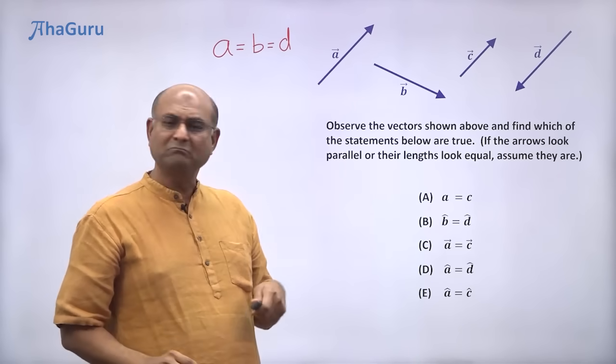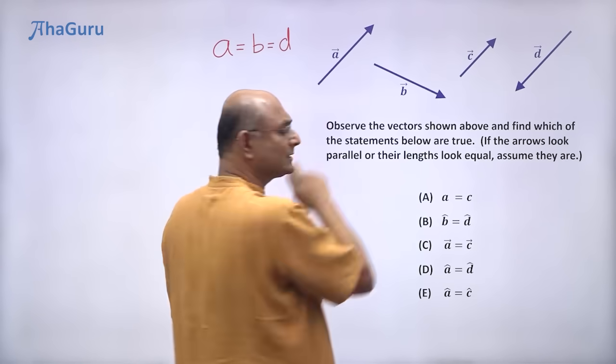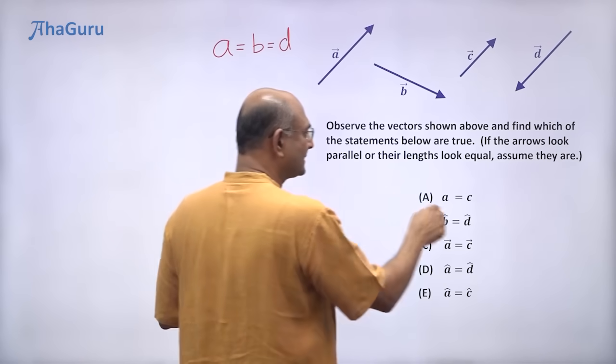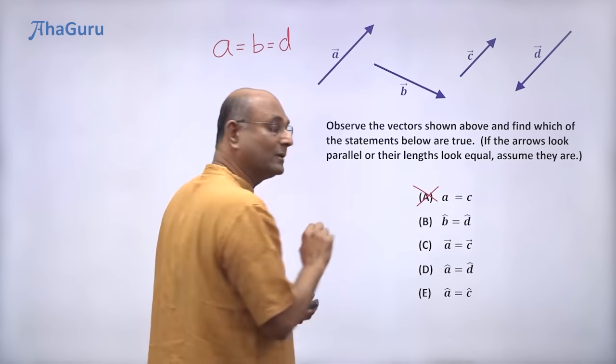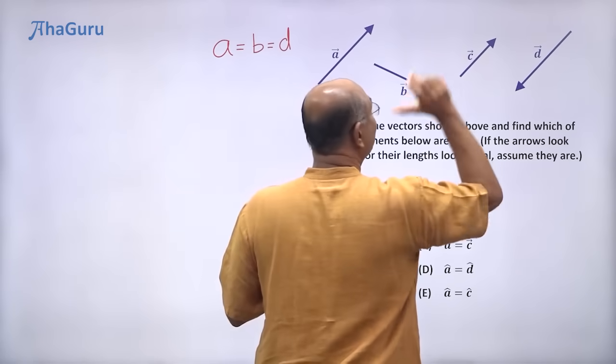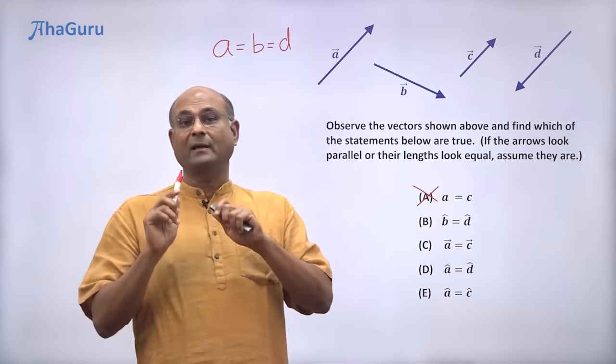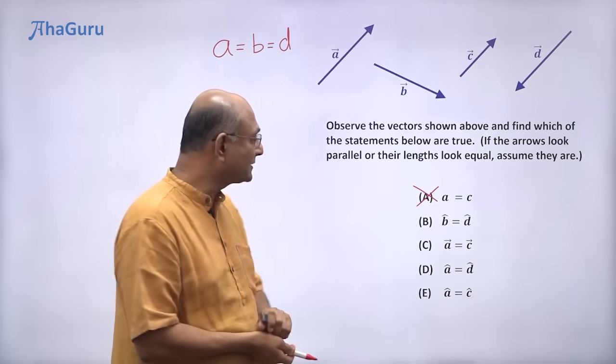Is that given here? No. Length of A is equal to length of C is given. Is length of A equal to length of C? Clearly no, right? So this is wrong. So A equals C magnitude-wise is clearly wrong. A is much longer than C. So that statement tells us that A equal to C is wrong. So the first option is wrong.